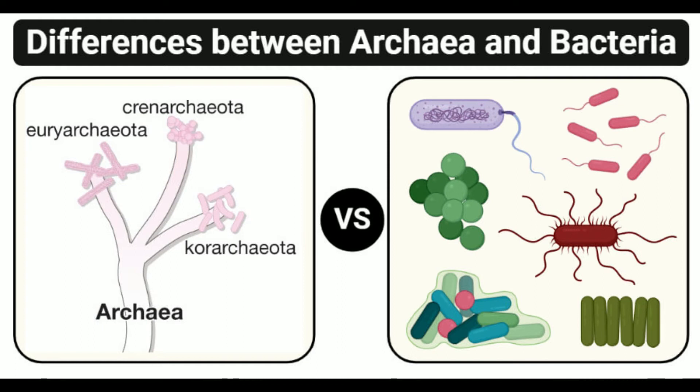Examples of archaea include Thermosphaera aggregans, Staphylothermus marinus, and Sulfolobus acidocaldarius. Examples of bacteria include Pseudomonas aeruginosa, Bacillus subtilis, Staphylococcus aureus, and Salmonella.